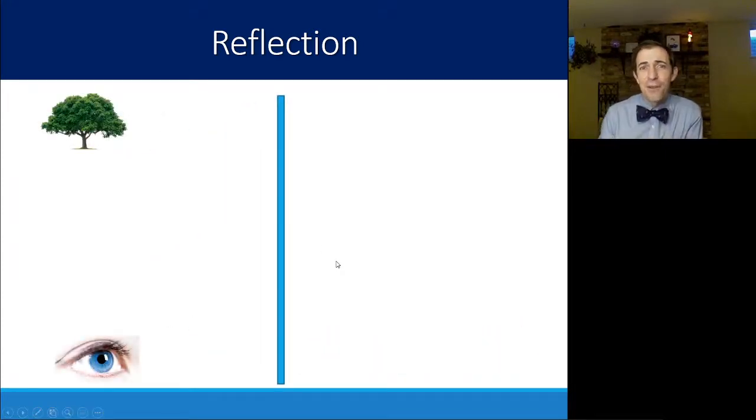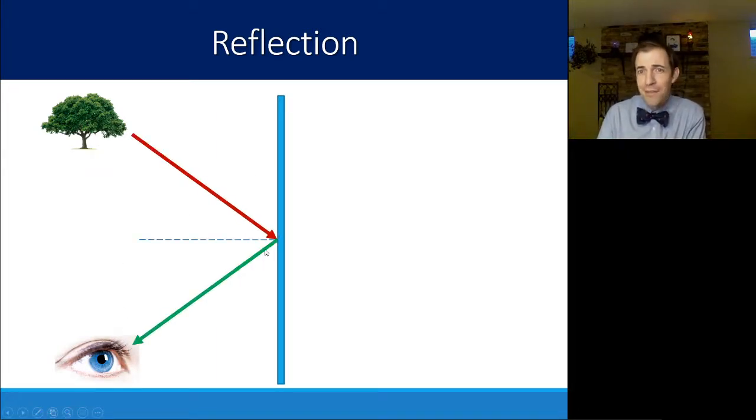Because of that, if you're trying to see an object like this tree, in order for it to get to your eye, it needs to bounce off of a surface with that law of reflection enacted, where the angle according to the normal line is always the same.